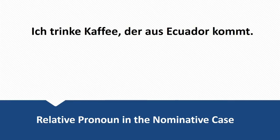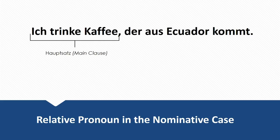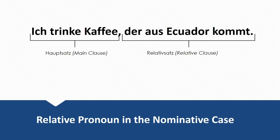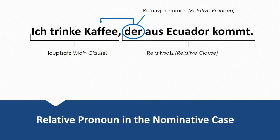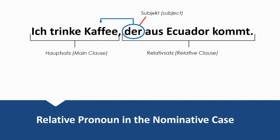First example: Ich trinke Kaffee, der aus Ecuador kommt. I'm drinking coffee that comes from Ecuador. So you see that 'der' is the English 'that', 'which', or 'who'. In this sentence we have the main clause 'Ich trinke Kaffee' and the relative clause 'Der aus Ecuador kommt'. The verb is at the end because relative clauses are subordinate clauses. The relative pronoun 'der' refers back to Kaffee, and it's masculine because Kaffee is masculine. Der is also the subject of the relative clause.